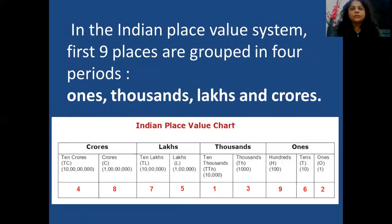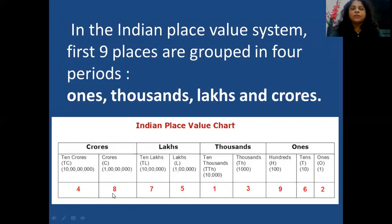In the Indian place value system, the first 9 places are grouped into 4 periods: the ones period, the thousands period, the lakhs period, and the crores period. In the ones period, we have 3 places: 1s, 10s, and 100s. In the thousands period, we have thousands and ten thousands. In the lakhs period, we have lakhs and ten lakhs. In the crores period, we have crores and ten crores.